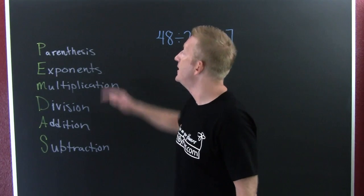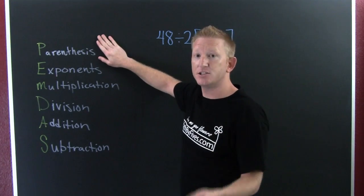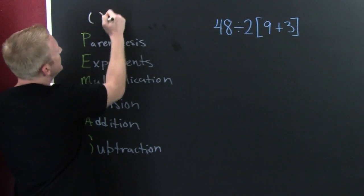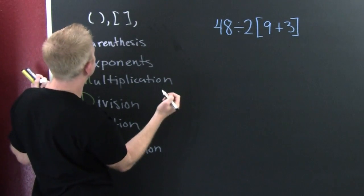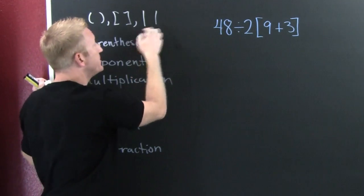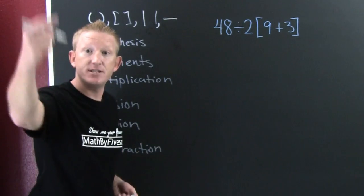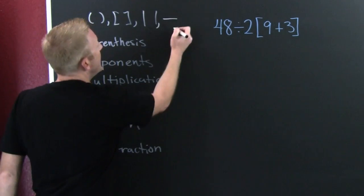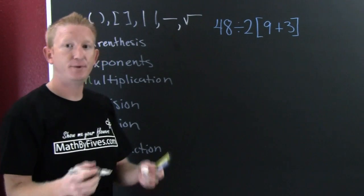P is the first thing in your hierarchy — P for parentheses. I've even seen some books change it to G for grouping symbols. What are grouping symbols? Roundies, squaries, straighties — absolute value bars. Division bars where you have a numerator and denominator with expressions in each one — and the square root can also be seen as a grouping symbol.